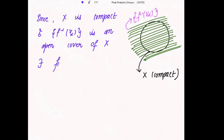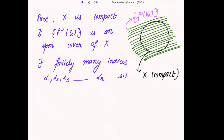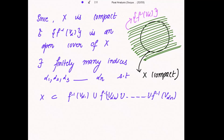So there exist finitely many indices — let's say α₁, α₂, α₃, up to αₙ — such that X is a subset of f inverse(V_α₁) union f inverse(V_α₂) union ... union f inverse(V_αₙ), which can also be written as f inverse of (V_α₁ union V_α₂ union ... union V_αₙ).